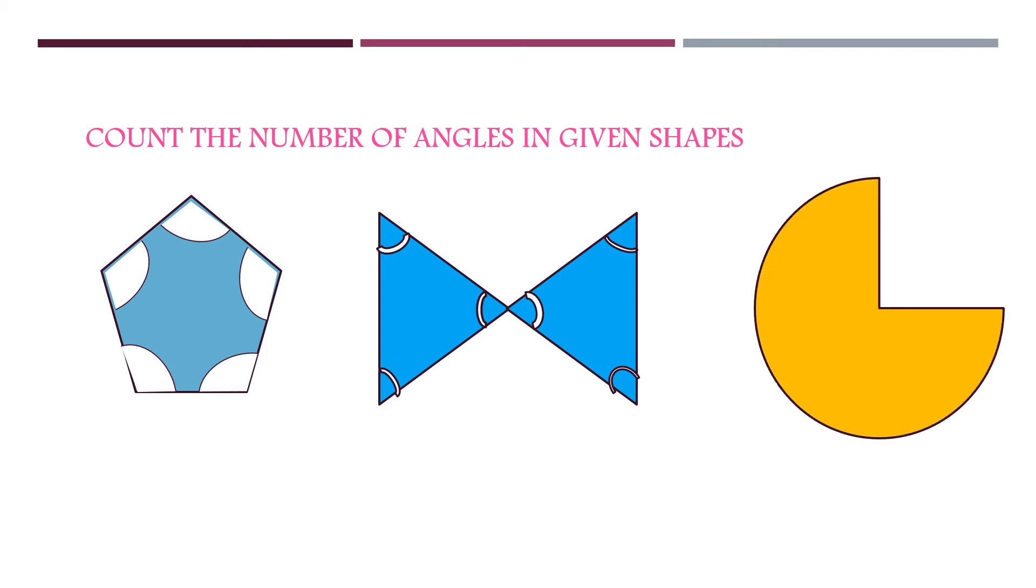Now the last picture. Here how many angles you can see? There are 3 types of angles. So in pentagon you can see 5 angles, and the second picture 6 angles, and the third picture 3 angles.